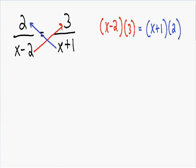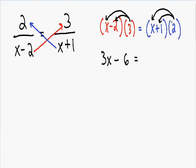Now we just need to solve for x. First let's get rid of the parentheses and distribute. Distributing the 3: 3 times x equals 3x, and 3 times negative 2 equals negative 6. On the right side, distributing the 2: 2 times x equals 2x, and 2 times positive 1 equals positive 2.